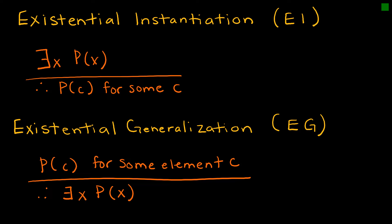Our next two rules are existential instantiation and existential generalization. Existential instantiation says: if there exists some X such that P(X), then I can say it's true for some specific value — that's really just the definition of existential. Existential generalization is just this backwards: if P(C) is true for some element C, then we can say there exists some element X such that P(X) is true.